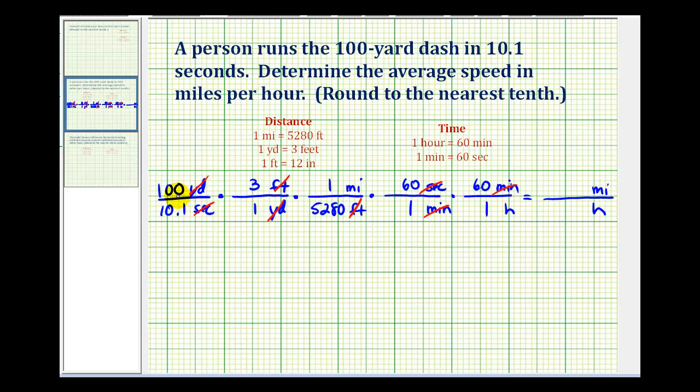The numerator is going to be 100 times 3 times 1 times 60 times 60, which is 1,080,000. And the denominator is 10.1 times 5,280, which is 53,328.